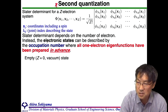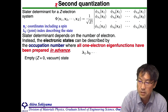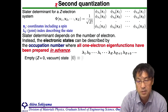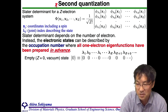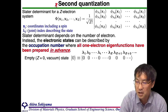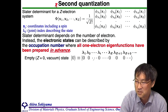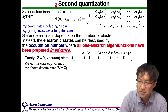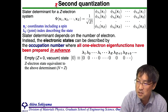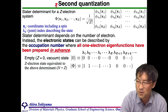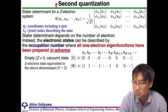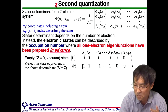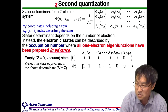By using this idea, the empty state with no electron is equivalent to the vacuum state, as in this formula. Then the N-electron state is equivalent to the Slater determinant, as in this formula. The electron occupies up to the λ_z state from the λ_1 state.